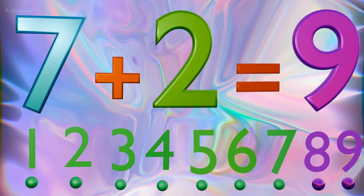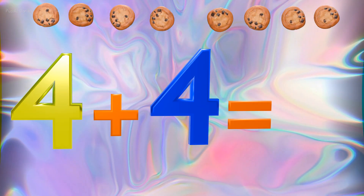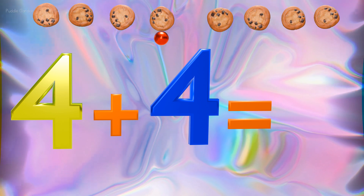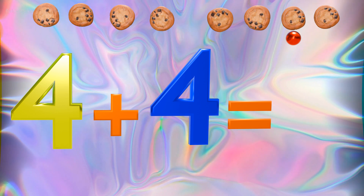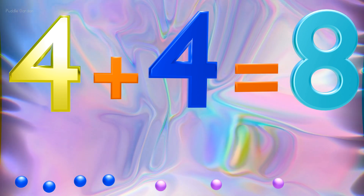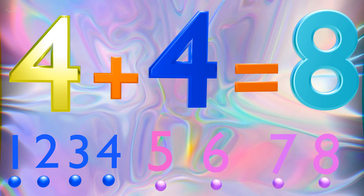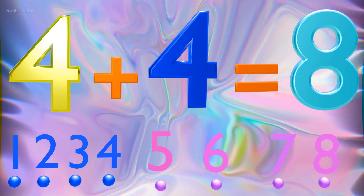Nice work so far. 4 plus 4 equals 8. So if we have 4 and we're going to jump forward 4 more, that means we're going to count on from 4. We land on 8 because we have 4, 5, 6, 7, 8. We counted on 4 numbers and landed on 8.